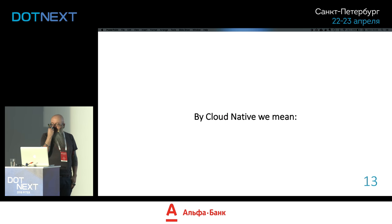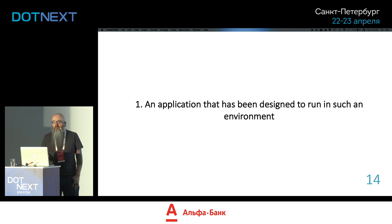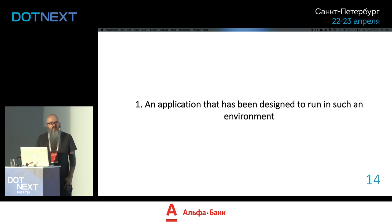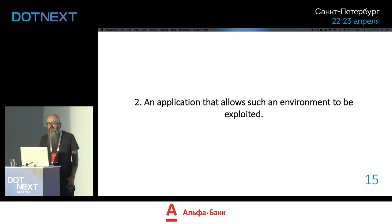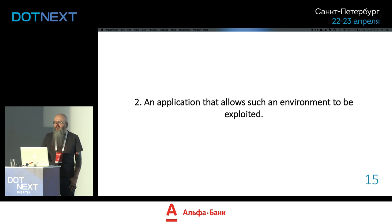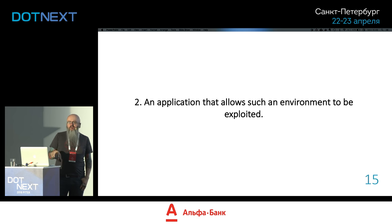That tends to be why people go to the cloud. Long term, cloud can actually be more expensive than a data center, but the elasticity is a considerable benefit. When people talk about building cloud-native applications, they mean building applications that are designed to run in that kind of environment — elastic, on-demand, and self-service — and more than that, designed to exploit that environment.